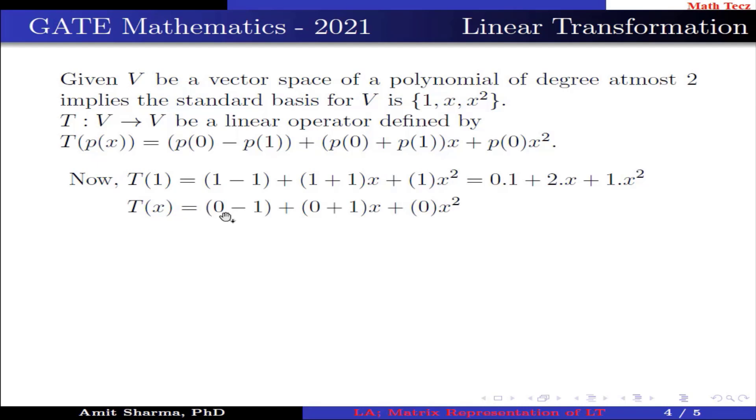Now T(x) = (0 - 1) + (0 + 1)x + (0)x². Here p(0) = 0 and p(1) = 1. This can be further written as -1(1) + 1(x) + 0(x²).